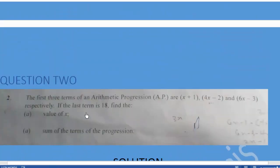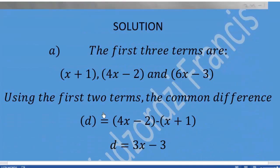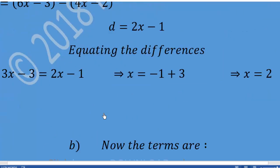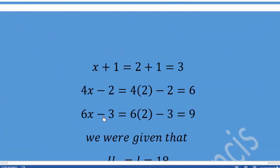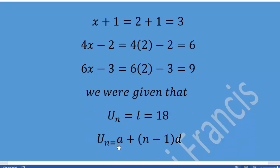We've determined the value of x. Now we're asked to find the sum of the terms of the progression. Don't forget we're given that the last term is 18, and note that the last term is also a term in the arithmetic progression. We can use the general nth term formula: u_n = a + (n-1)d. First, substituting x=2 into the terms gives us 3, 6, and 9 as the first three terms.